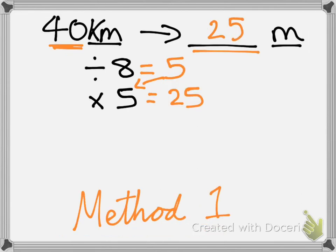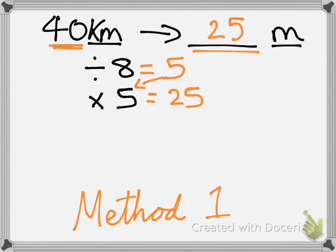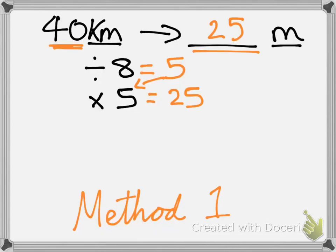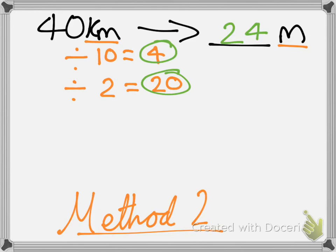So 40 kilometres turns into 24 miles. As you can see, in our example here, method 1 was actually the more accurate answer. Only slightly, though. But it's up to you which one you prefer. Now we've gone from kilometres to miles. I'm going to now show you how to convert from miles to kilometres, because it's important that you can do both.